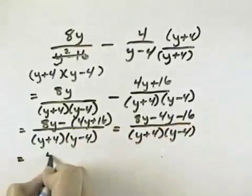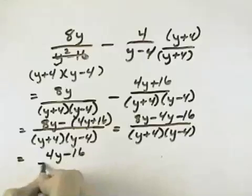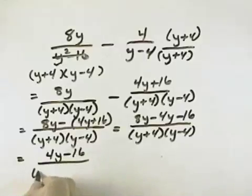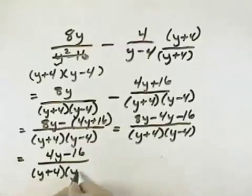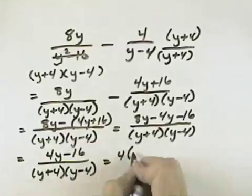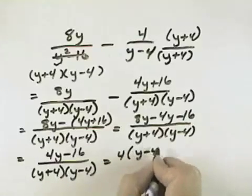The 8y minus 4y leaves 4y minus 16 over our common denominator of y plus 4 times y minus 4. We can factor a 4 out of the numerator, leaving y minus 4.